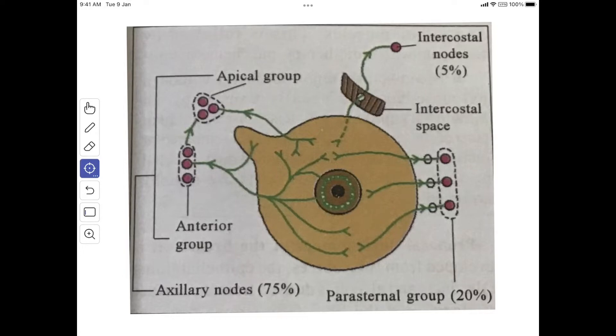Next, we'll see the lymphatic drainage. The lymphatics of the mammary gland are of two sets: those draining the parenchyma of the breast including the areola and nipple, and those draining the overlying skin excluding areola and nipple.